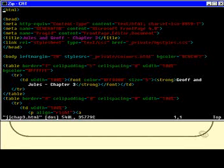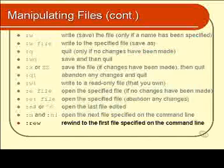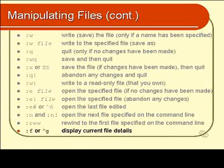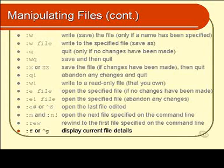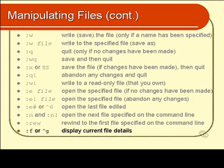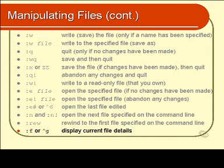Don't forget you also have the option of going back to the previous file you were just looking at using colon e hash, which takes you back to whatever you were in a moment ago. Finally, colon f will simply display the details about the current file — the file name, what line number you're on, and so on. You can also use control g to do exactly the same thing. On the slide, control g is specified with a caret symbol, which is common notation in Unix to represent a control character.